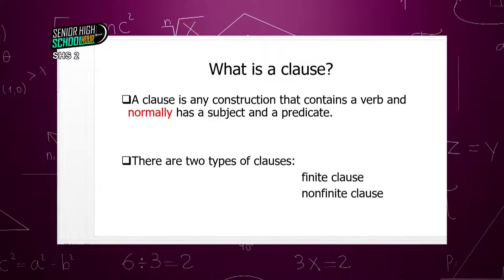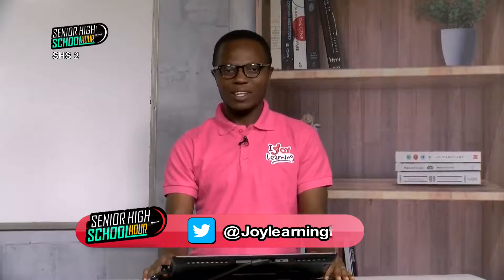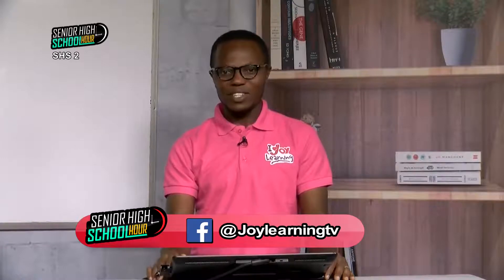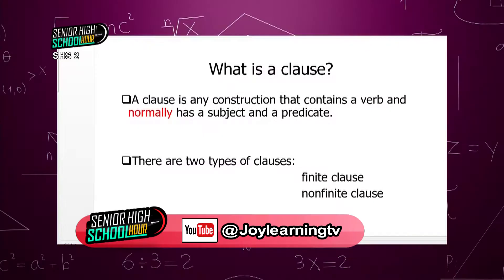Now, let's look at more examples. There are two types of clauses, and I would like us to establish that here, because some definitions are sometimes skewed. In this lesson, I'd like us to know that any construction that has a verb in it is a clause. But clauses can be grouped into two: finite clauses and non-finite clauses.